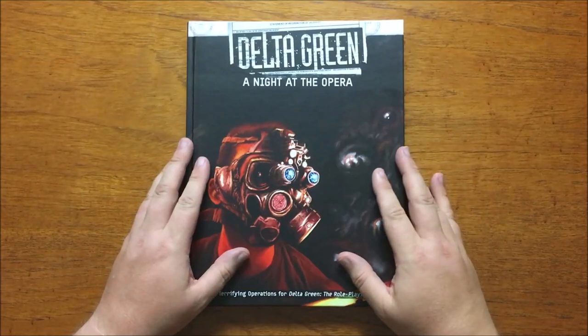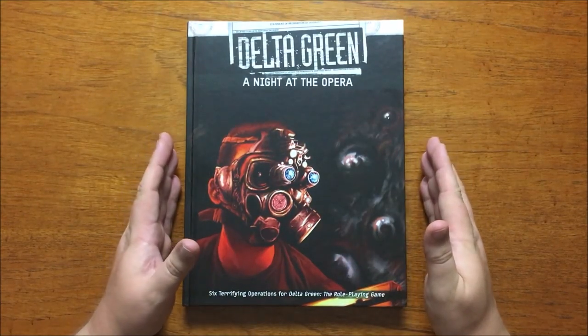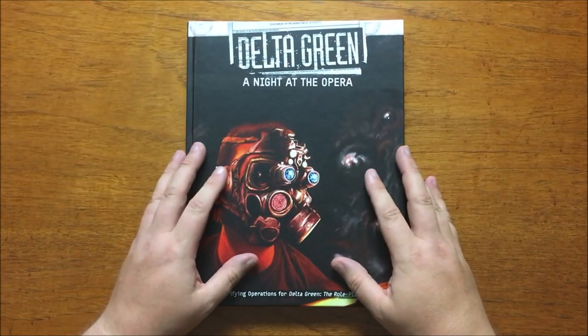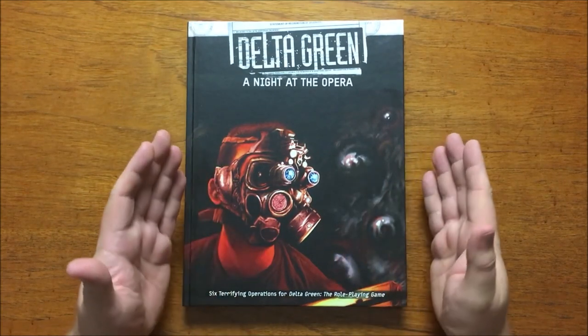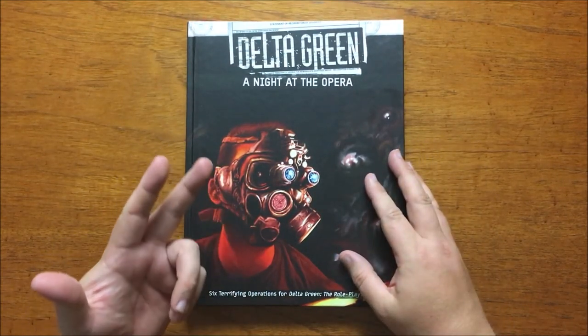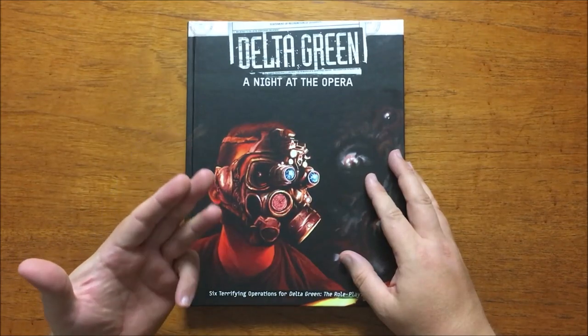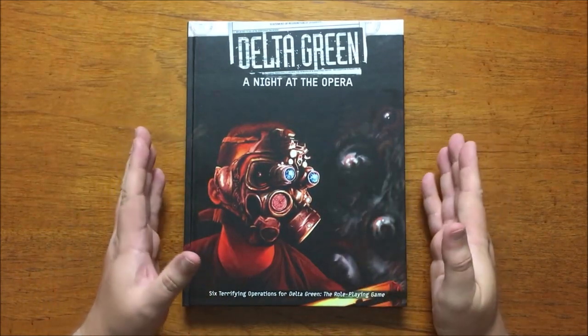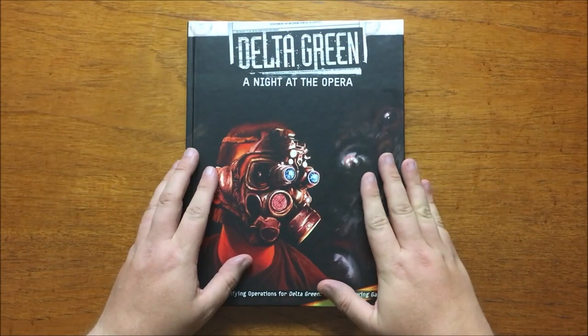Okay, first a bit of history. Released in 2018, A Night at the Opera is a collection of five previously released standalone scenarios: Viscid, Music from a Darkened Room, Extremophilia, The Star Chamber and Observer Effect, with the addition of a new introductory scenario Reverberations.